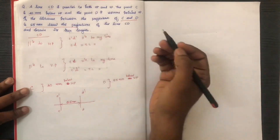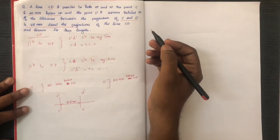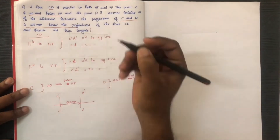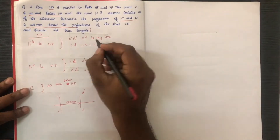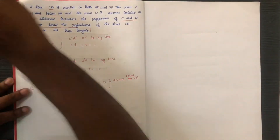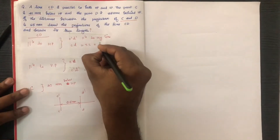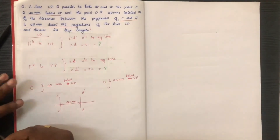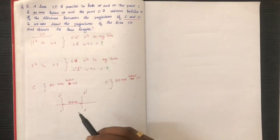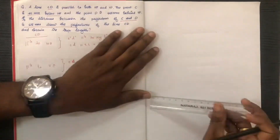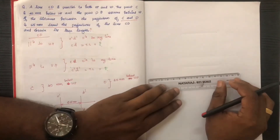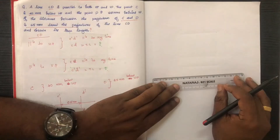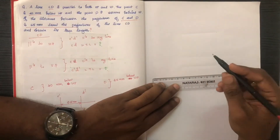To draw the projections of line CD and obtain the true length, we need to find — starting with the XY line — the true length first.